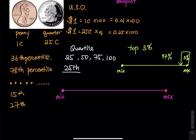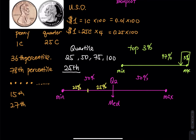Step two: find the median — cut the entire data set into two equal pieces right in the middle. This is called Q2. The median cuts the entire data into two pieces: 50 percent on the left and 50 percent on the right. Then on the first 50 percent, make another cut right in the middle, dividing it into two 25 percent pieces. This cut is called Q1.